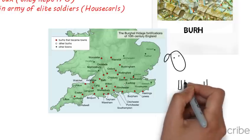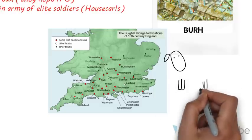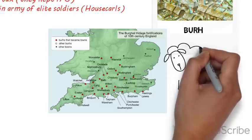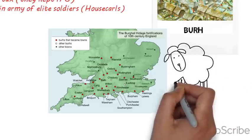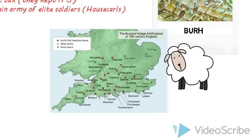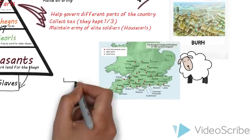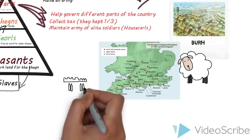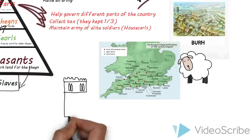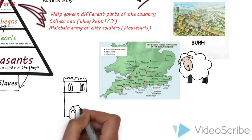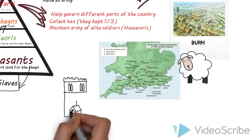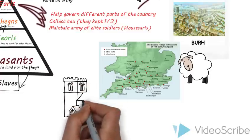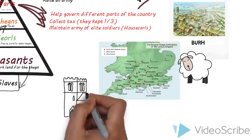In Anglo-Saxon England, you'd probably be shocked by the amount of sheep there were, because wool was one of the biggest exports for the Anglo-Saxons. They sent it mostly to the Netherlands and to Germany, and they had a flourishing trade.